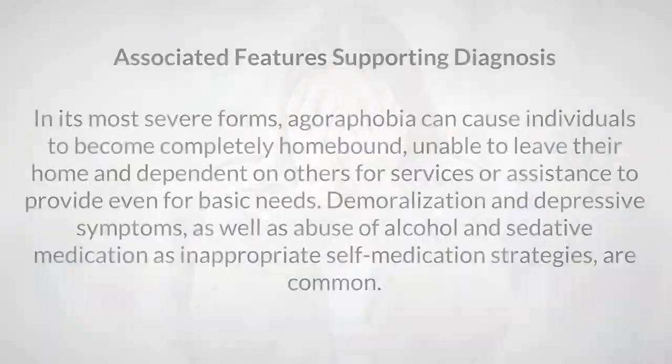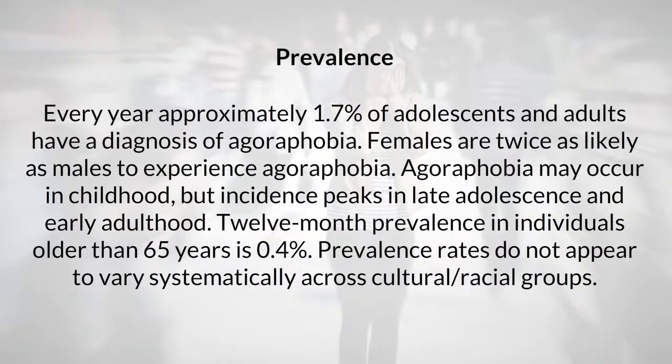Prevalence: Every year, approximately 1.7% of adolescents and adults have a diagnosis of agoraphobia. Females are twice as likely as males to experience agoraphobia. Agoraphobia may occur in childhood, but incidence peaks in late adolescence and early adulthood. The 12-month prevalence in individuals older than 65 years is 0.4%. Prevalence rates do not appear to vary systematically across cultural or racial groups.